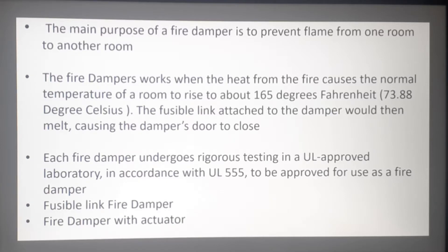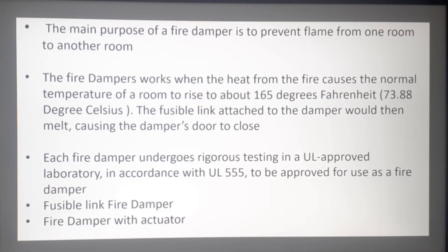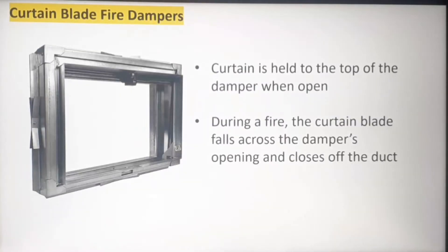In a fusible link fire damper, there is a fusible link that melts at a certain temperature. For example, if room temperature is around 28 to 30 degrees Celsius and it rises up to 73.88 degrees Celsius due to fire, the link will melt and the damper door will close. Once the damper door closes, air cannot travel from one end to the other.